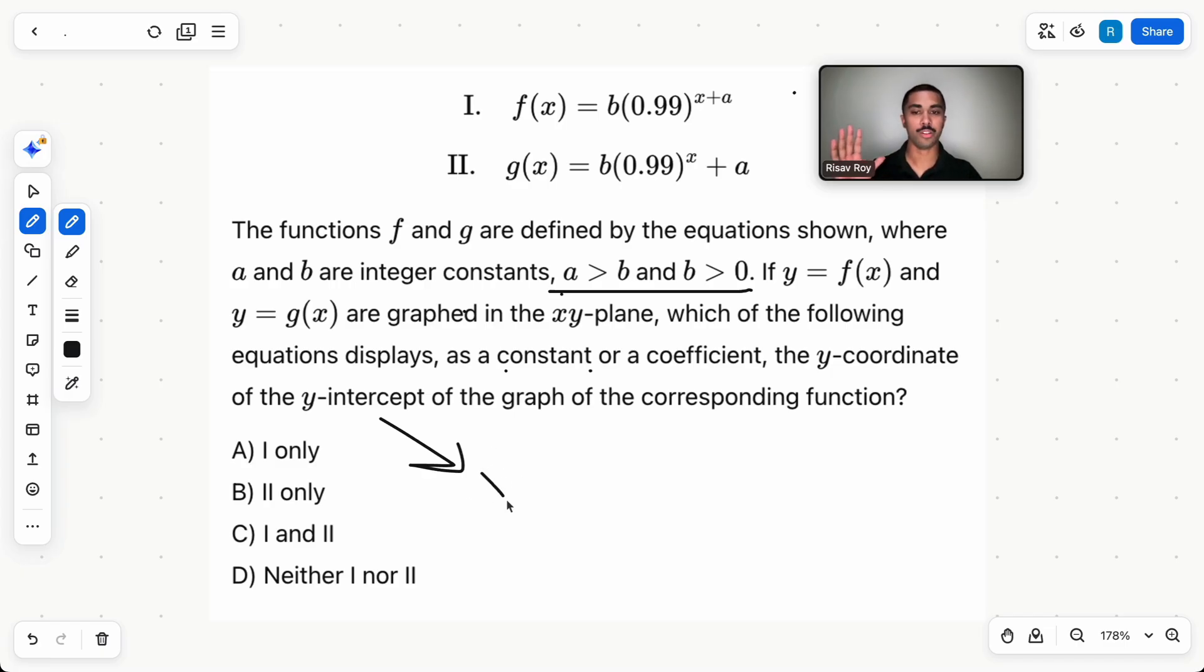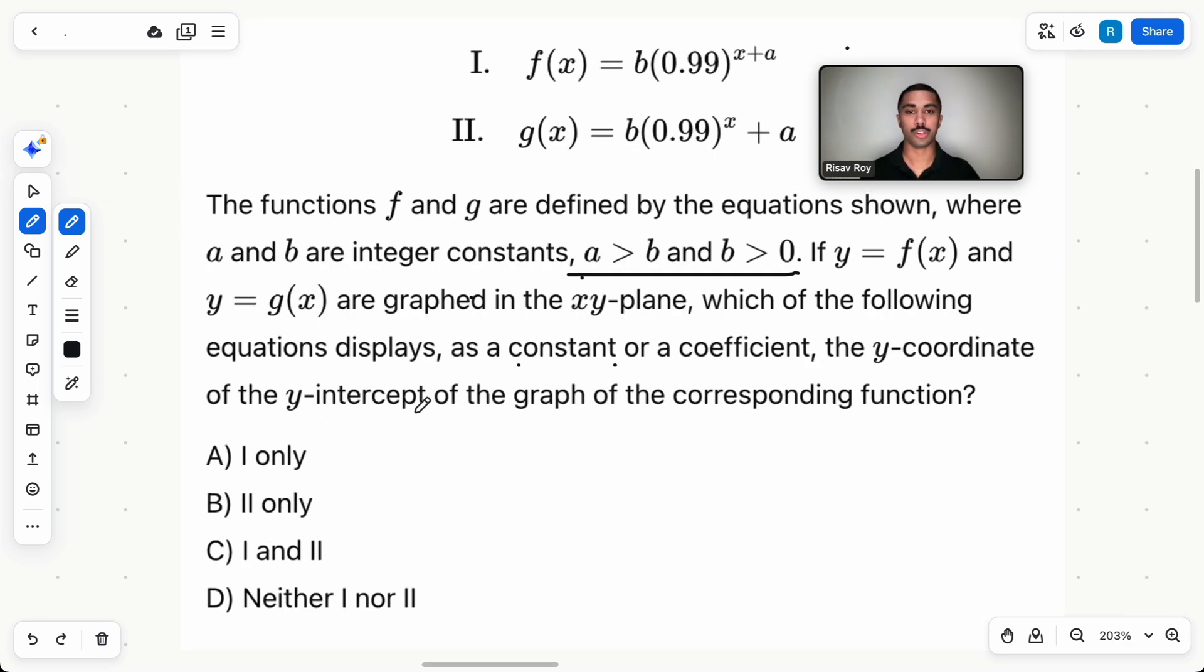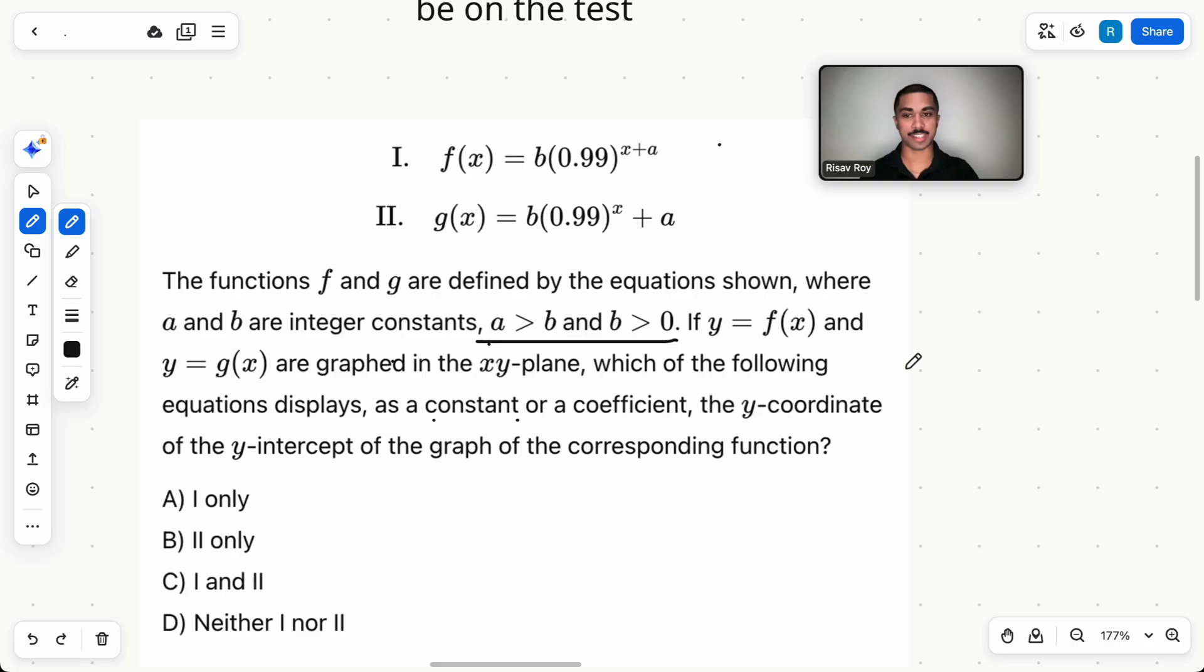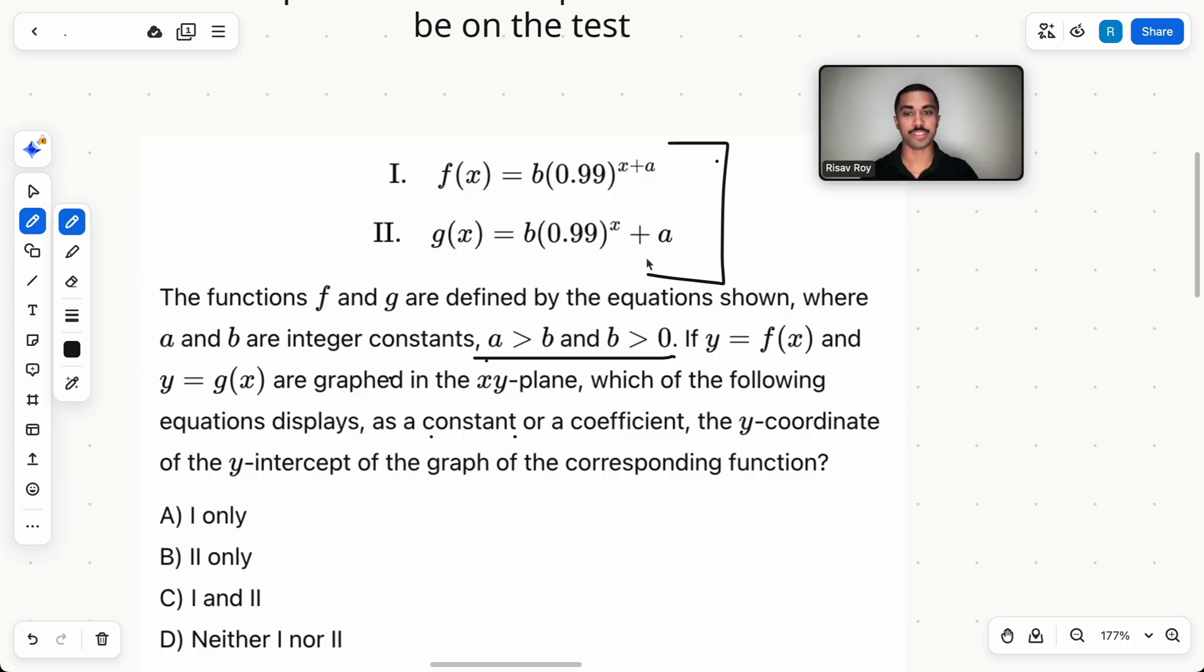What you need to understand for this question is that the y-intercept just means when x equals zero. That's something you should have memorized, just like x-intercept means y is zero. So in this case, all this last sentence is saying is that when you plug in x equals zero into each of these equations, does it result in a constant or coefficient that is originally displayed in this equation? For example, the constants or coefficients originally displayed in this equation is only b. For the second one, it's b and a.